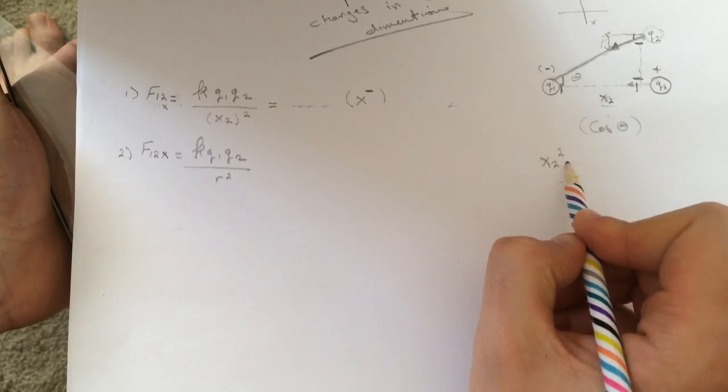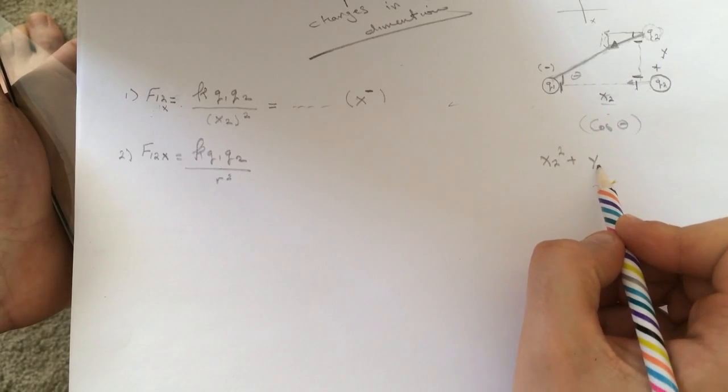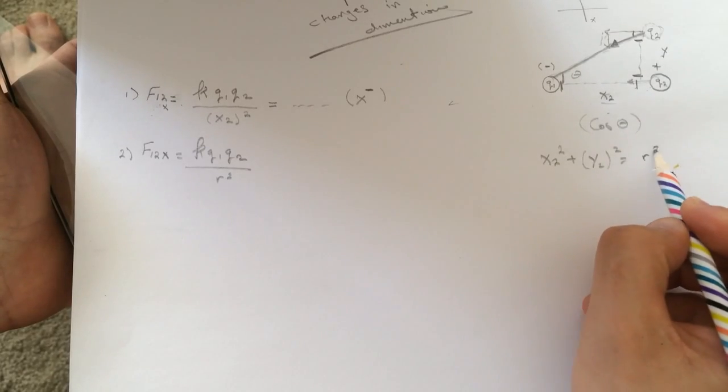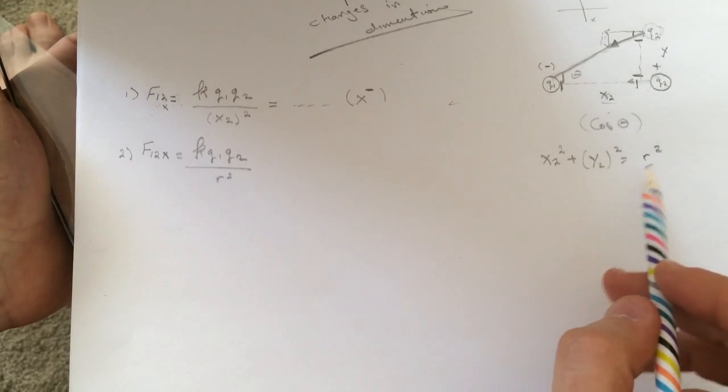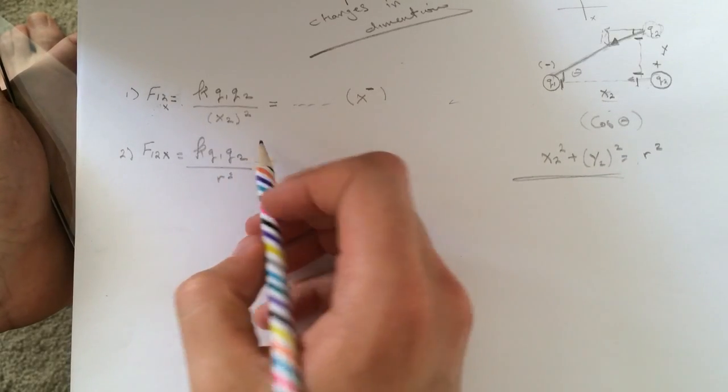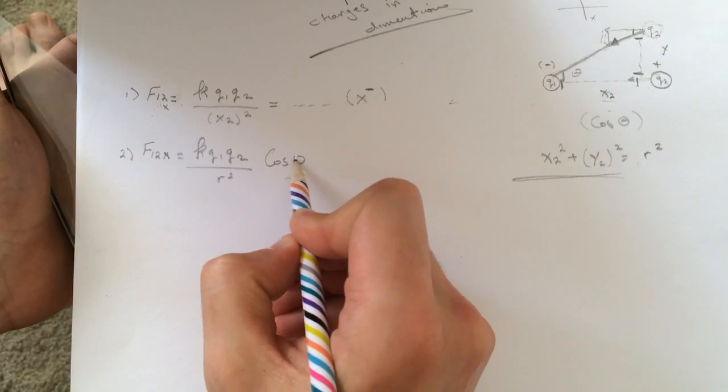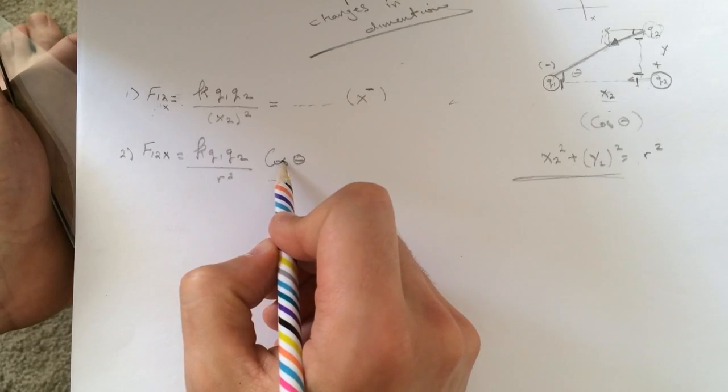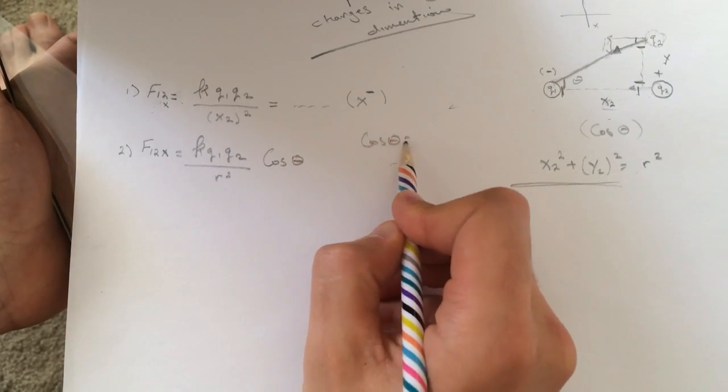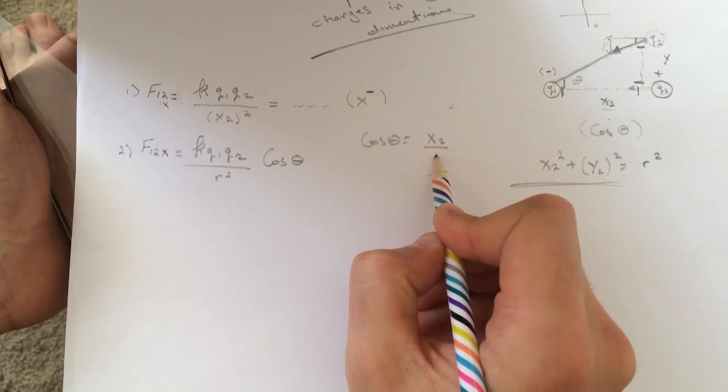So x2 squared plus I'll call this y so this is y2 squared equal the r squared. So we'll get your r from this equation here. And because they want the x direction so we'll do the cosine of theta and the cosine of theta is the same as x2 divided by r.